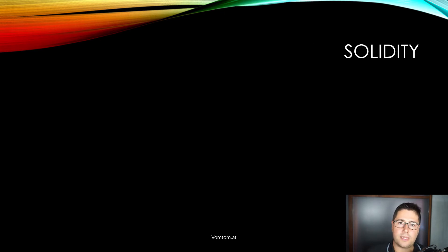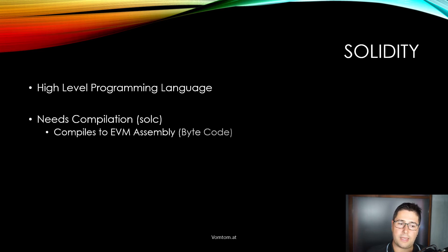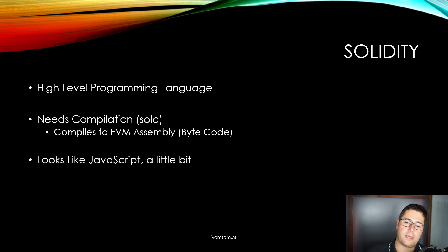Now let's talk about Solidity. Solidity is a high-level programming language for Ethereum and it needs compilation. It uses solc — the Solidity compiler — which takes all the programming code you write and compiles it down to EVM assembly or bytecode. This bytecode can then be deployed on the blockchain. It looks a little bit like JavaScript; in the newer versions a little bit less so, but in the first version of Solidity it looked a lot like JavaScript.